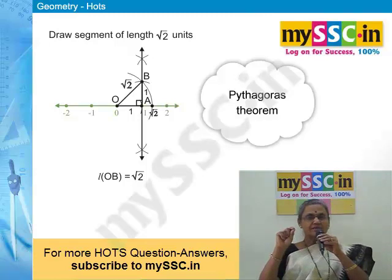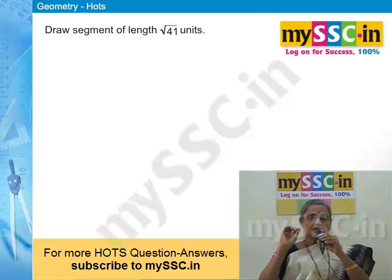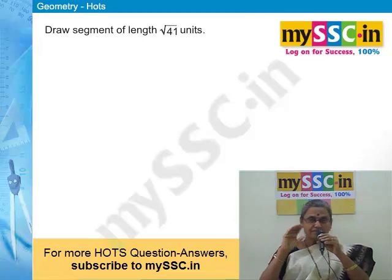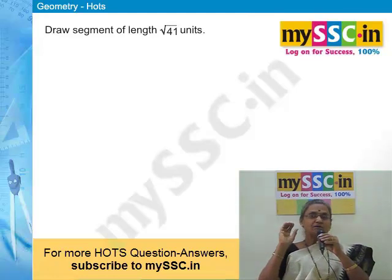So using the concept of √2 learned in eighth standard, you can solve this problem. The difficulty level again increases if I ask you to draw a segment of length √41. To draw √41, you first split 41 into two numbers that are perfect squares, then take their square roots — those square roots become the perpendicular sides of a right-angle triangle.